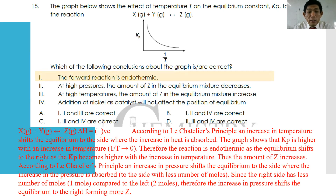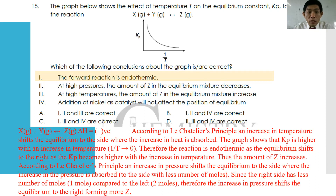Statement one: the forward reaction is endothermic — true. Statement two: at high pressure, the amount of Z at equilibrium decreases — wrong, because as pressure increases, equilibrium shifts to the direction with fewer total moles of gas; since the right side has fewer moles, Z increases. Statement three: at higher temperature, the amount of Z increases — true, since the forward reaction is endothermic. Statement four: adding nickel catalyst will not affect the position of equilibrium — also true. The answer is 1, 3, and 4.